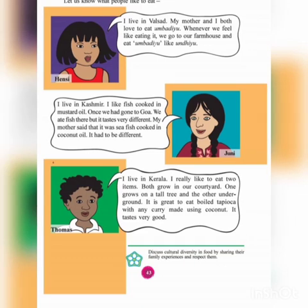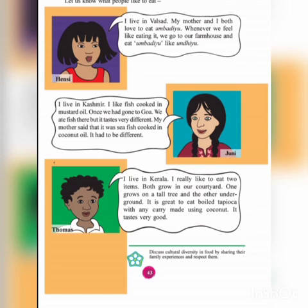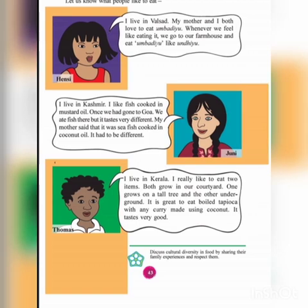In the third picture you can see Tomas, who lives in Kerala. He really likes two food items that both grow in his courtyard — one on a tall tree and the other underground. He loves boiled tapioca with a curry made using coconut, and it tastes very good. So all three children are from different regions, and therefore their likes and dislikes are different from each other.